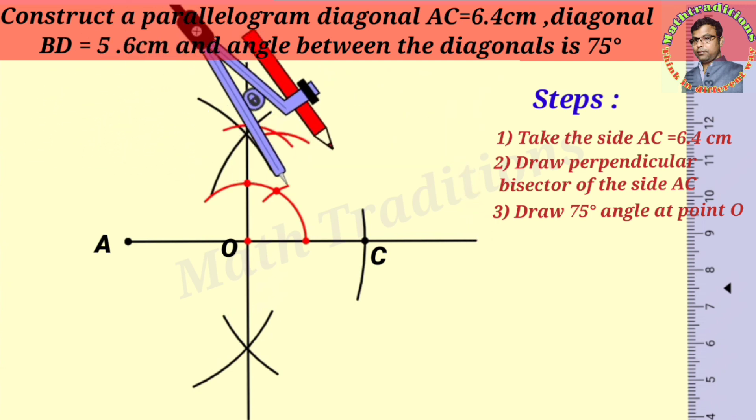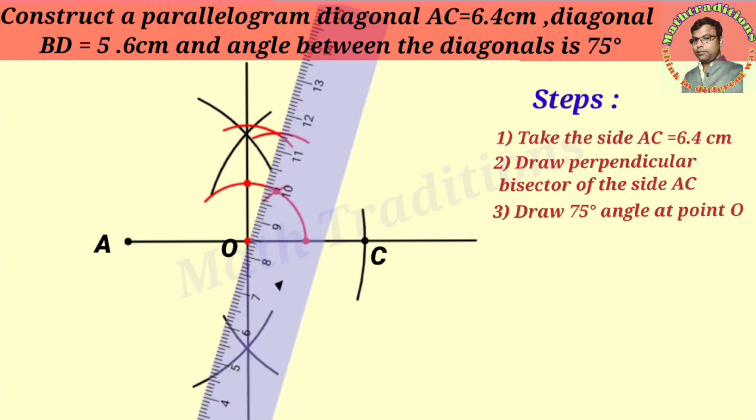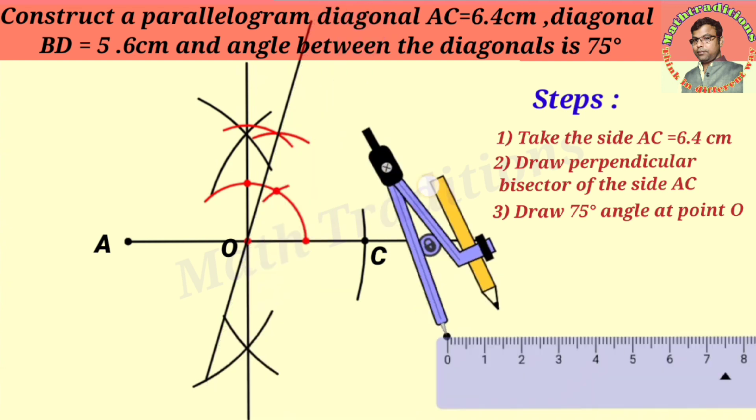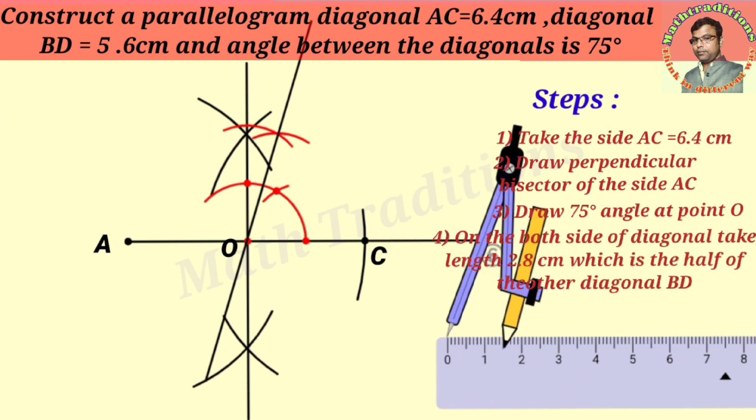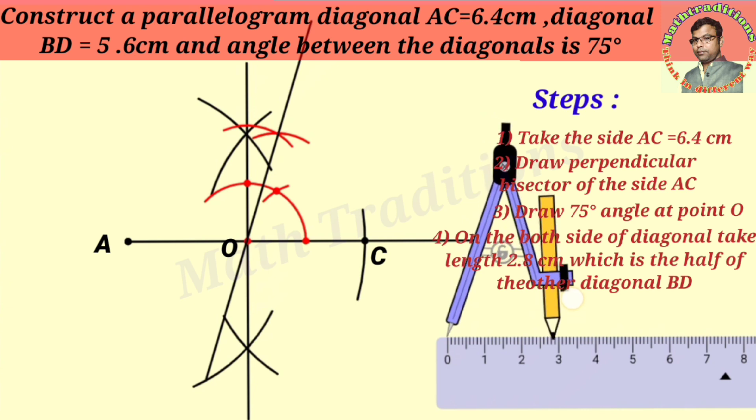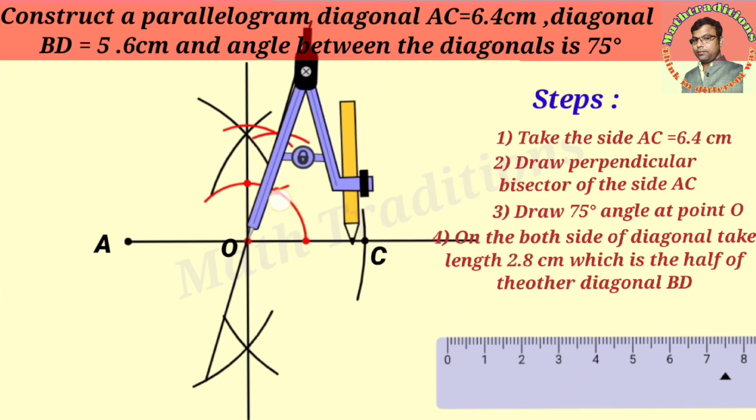Now for the other diagonal, we will take the length BD. Bisecting this length, we get 2.8 centimeters (half of BD equals 5.6 divided by 2). We will take this length from O on both sides of the diagonal.